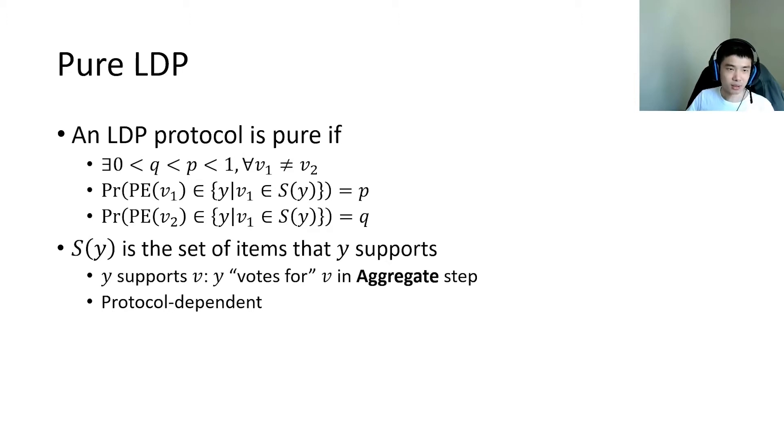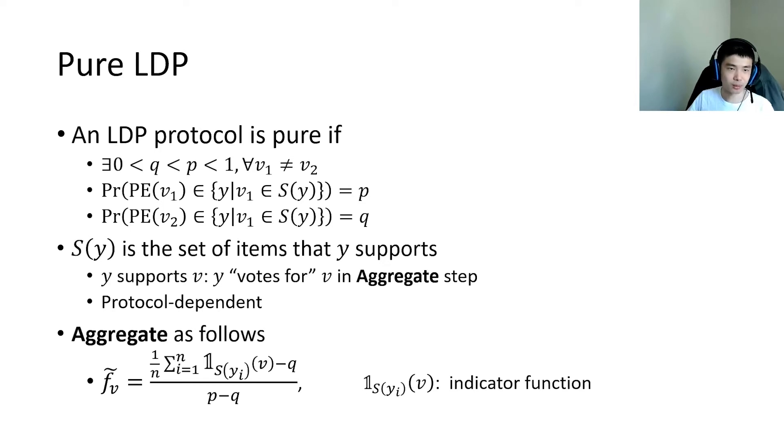The support set depends on the protocol we use. In the aggregate step, the pure LDP protocols estimate the frequency of an item following this equation. Here, the indicator function is 1 if y supports v, otherwise it is 0.